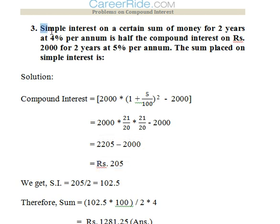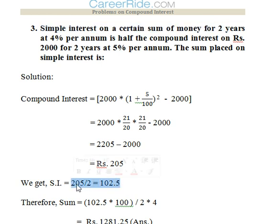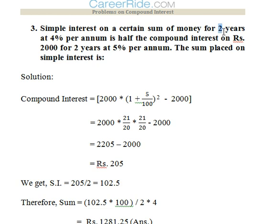The first statement says the simple interest on a certain sum for 2 years at 4% per annum is half the compound interest. So we divide 205 by 2 to get 102.5. The question asks for the principal placed on simple interest. Since SI = P × R × T / 100, we get P = (102.5 × 100) / (4 × 2), giving us the answer as Rs. 1281.25.